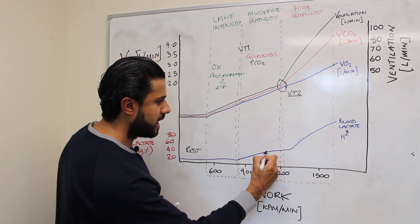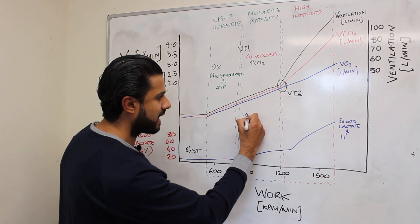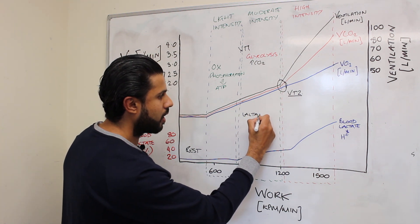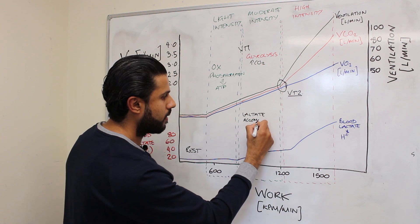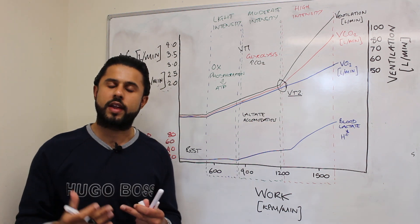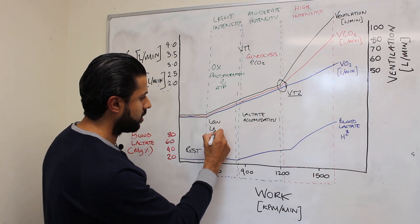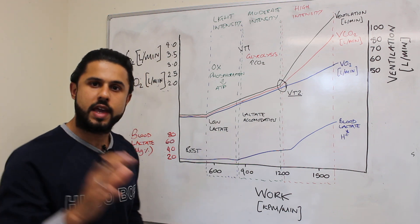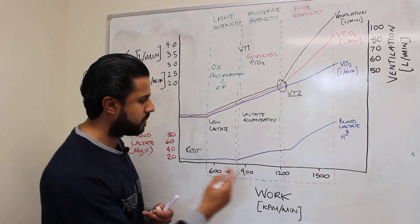Now it's an important point that I need to make here. Lactate increases but we're in what's called a lactate accommodation zone. So the muscle tissue can actually tolerate that lactate. So whereas this is a condition where you've got low lactate here, the lactate can be accommodated.